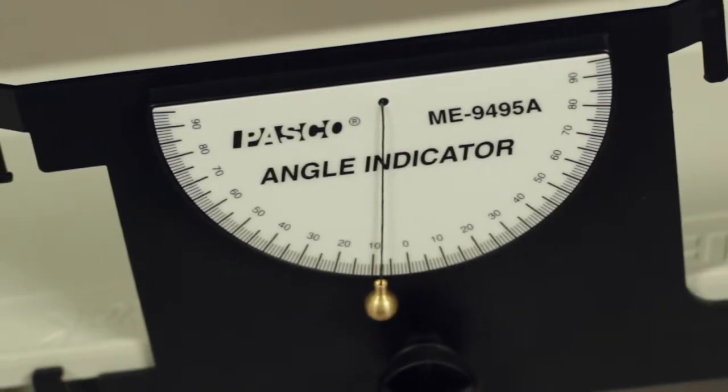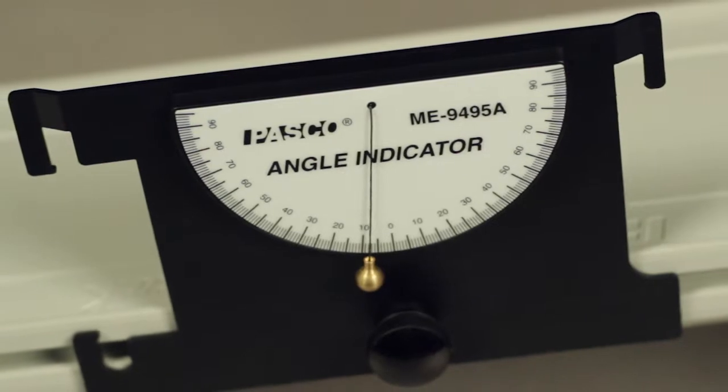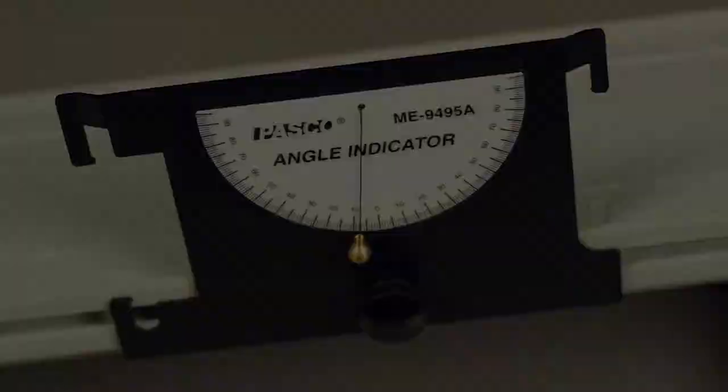The PASCO ME9495A Angle Indicator is an accessory used for measuring angles from 0 to 90 degrees in two directions. There are four different methods of using the angle indicator.